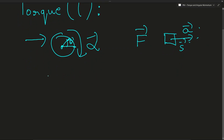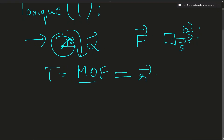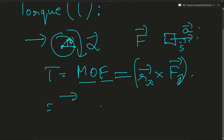As discussed in a previous video, torque is defined as the moment of force. Moment of force represents vector r and its cross product with force vector f. We know that the cross product of two vectors results in a vector whose direction is perpendicular to both. So if one is i-cap and the other is j-cap, then the result is k-cap. So torque is in a direction perpendicular to both the radius vector and the force vector.